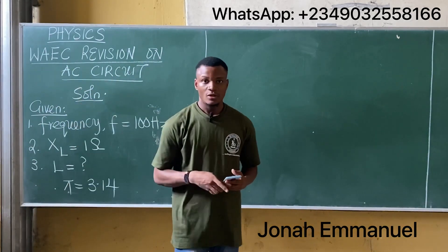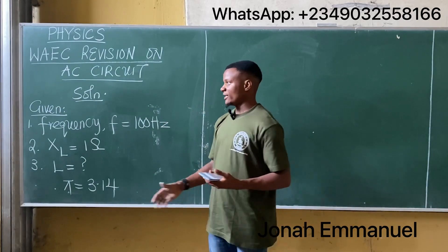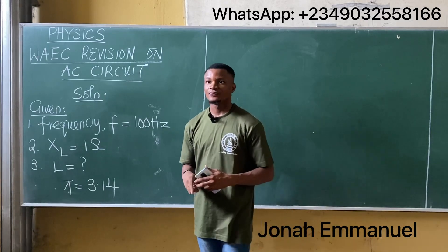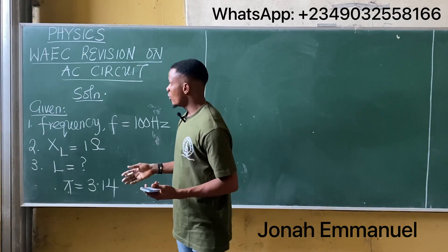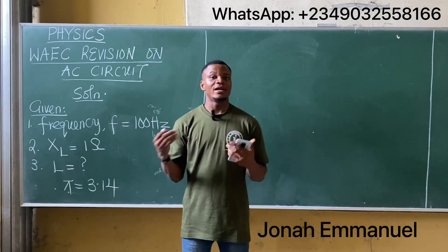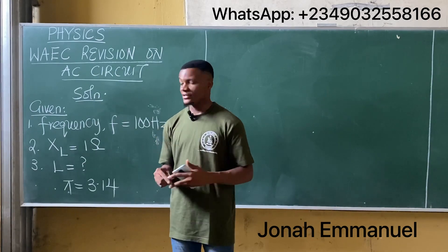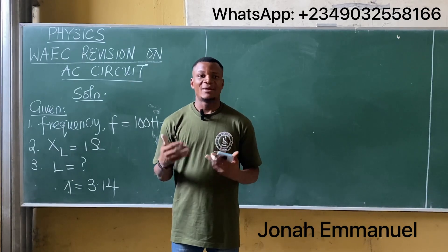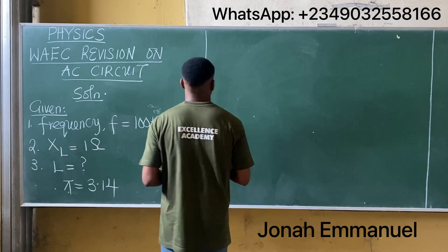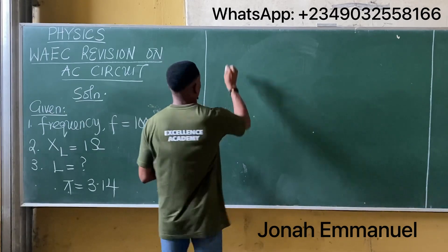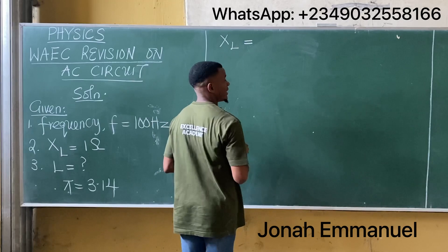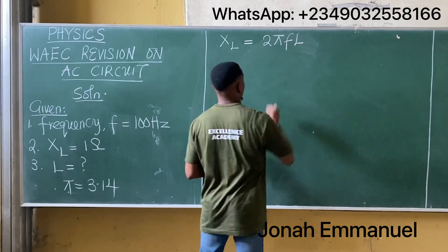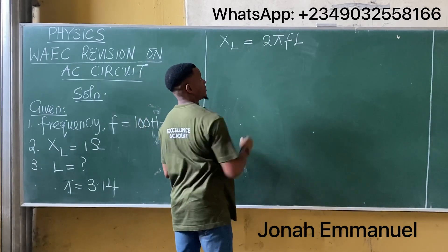We've treated the concept of AC in our previous class. An inductor is a device used for storing electrical energy. To solve this question I need to recall my formula: the inductive reactance XL is equal to two pi f L, where f represents frequency and L is your inductance in henry.